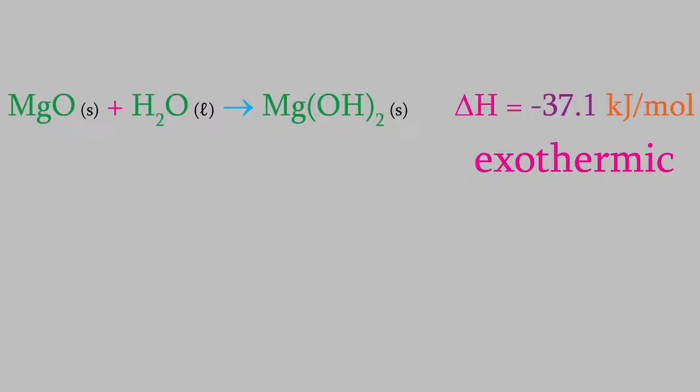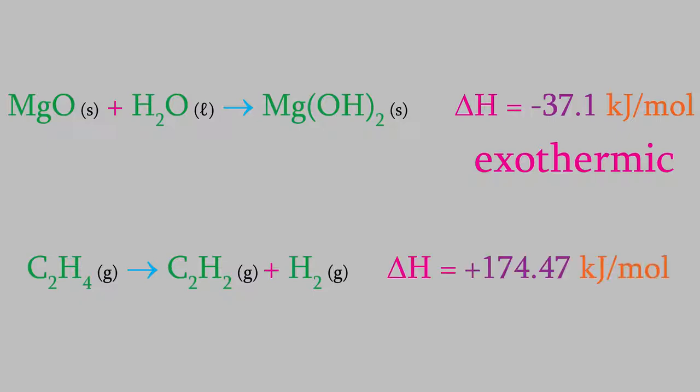On the other hand, the reaction in which ethene breaks down to form acetylene and hydrogen has an enthalpy of positive 174.47 kilojoules per mole. Since the enthalpy is positive, this is an endothermic reaction.